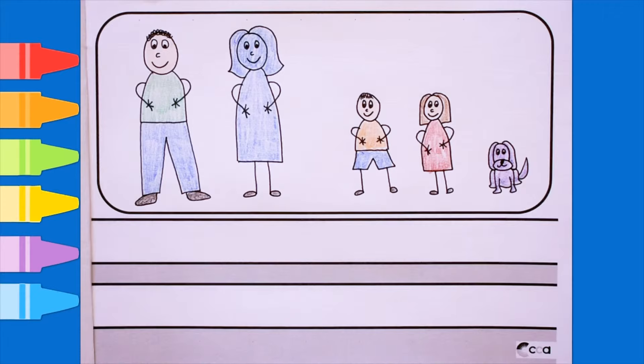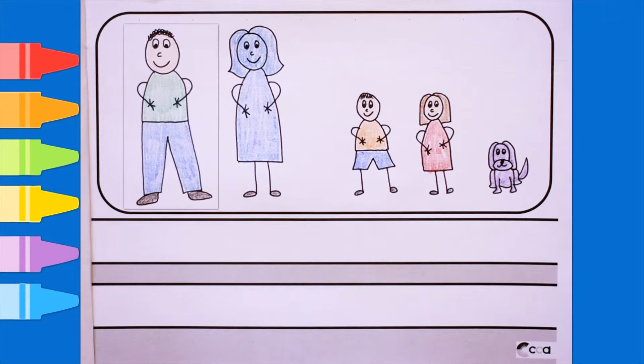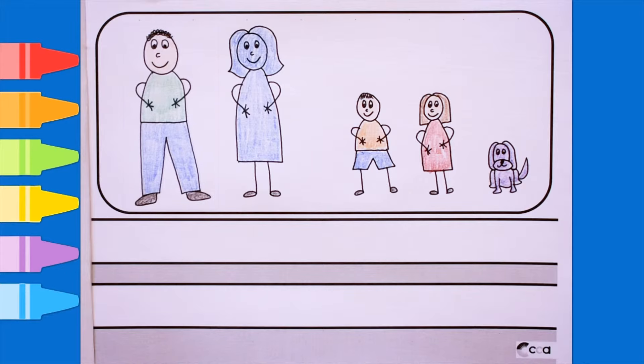Now look at my picture. I used real life colors because my dad always wears blue jeans and his favorite green shirt. My brother is wearing an orange shirt because he really likes his orange shirt. And I am wearing a red dress. I love my red dress.